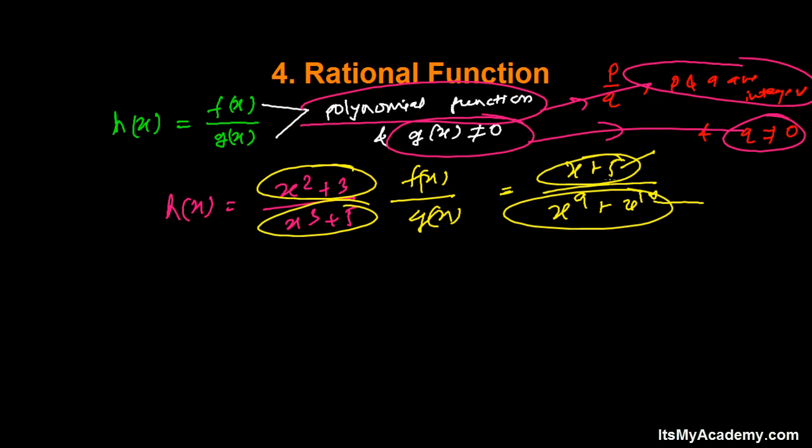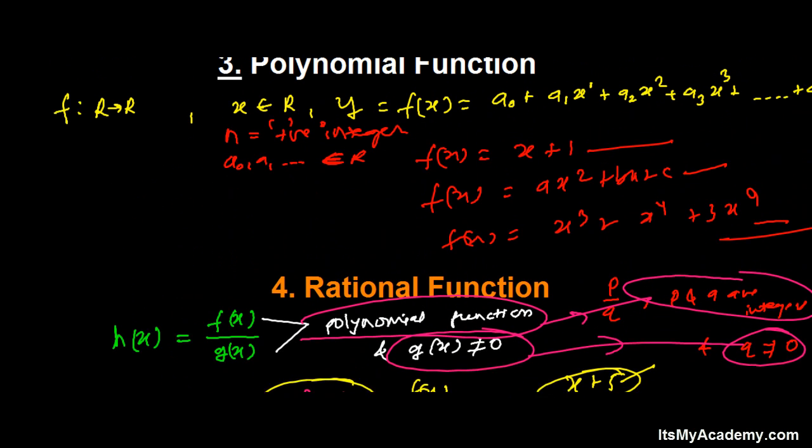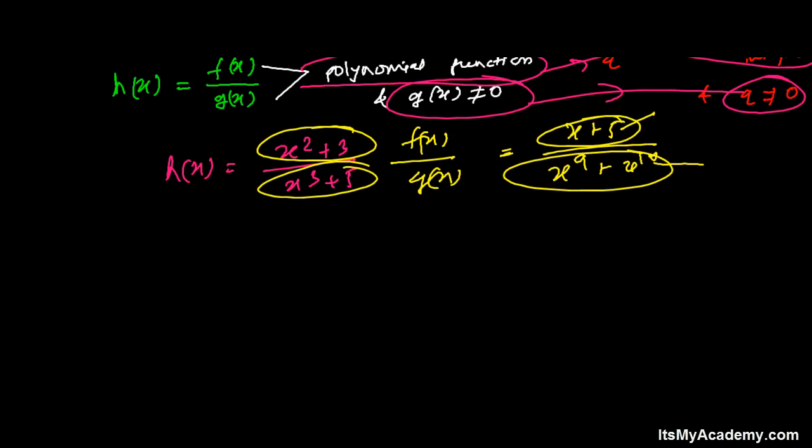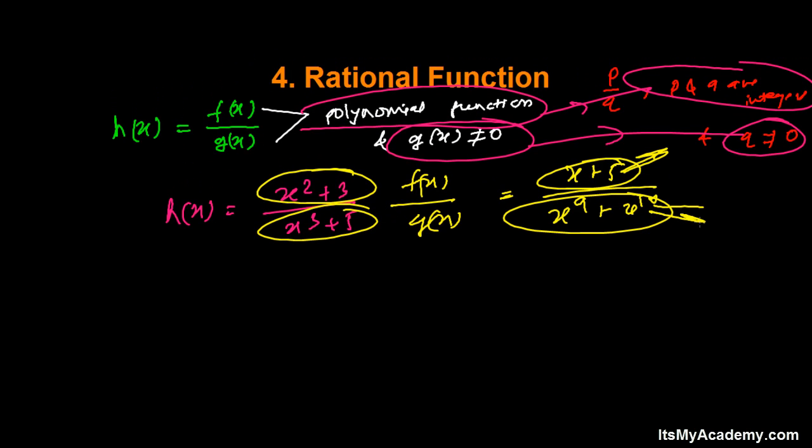As we cannot predict the graph of the polynomial function, first we should know how is this graph, then only we can further say how will be the rational function. We have to exactly determine, we have to calculate how it will be.